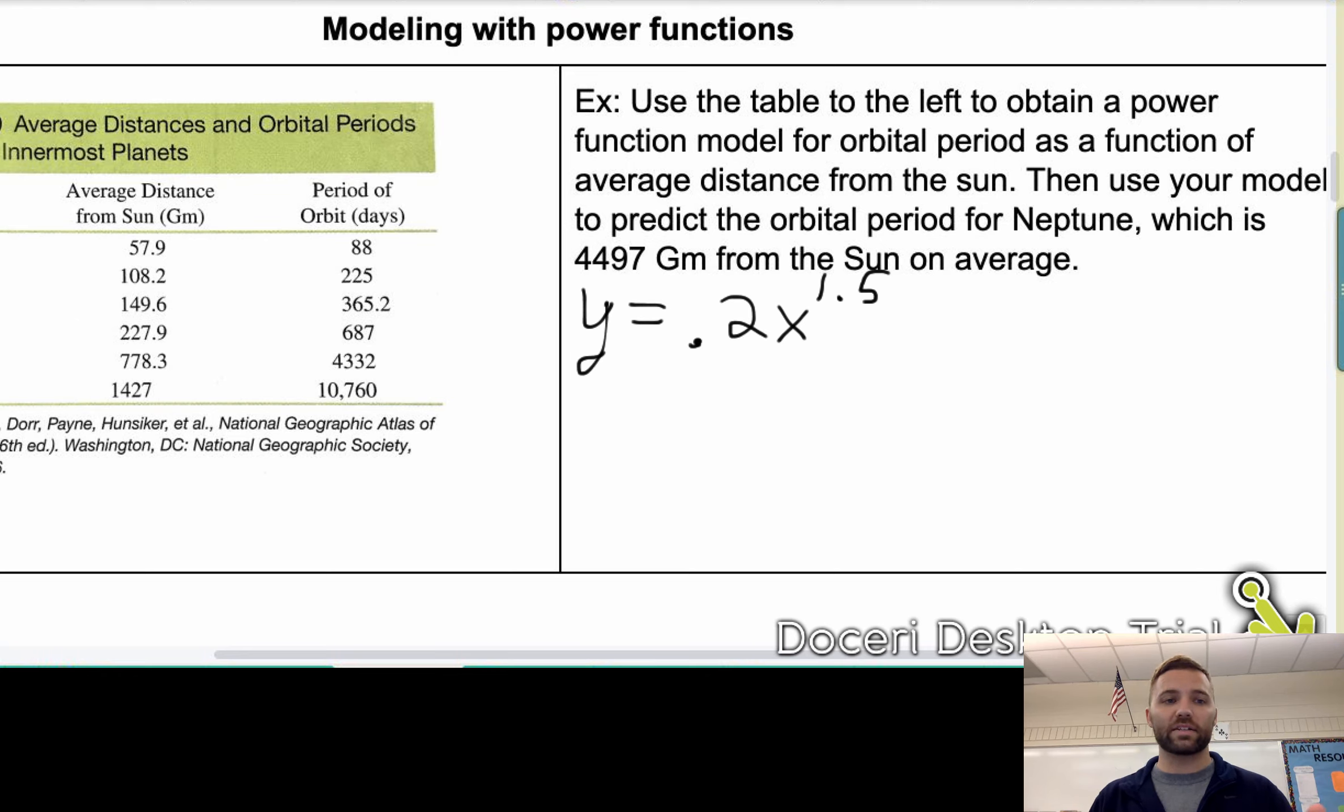Where the input, the X value, is the distance from the sun, and the output is going to be the period of the orbit. So for the question that's asked, the follow-up question here is, well, let's look at Neptune. If Neptune is 4,497 gigameters from the sun on average, then what is the period of its orbit? And so when you plug that in, you go Y equals 0.2 times 4,497 to the 1.5, you get 60,313 days.